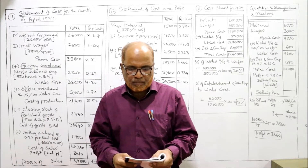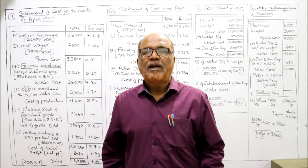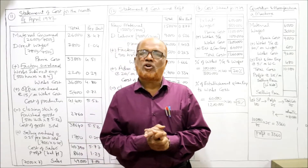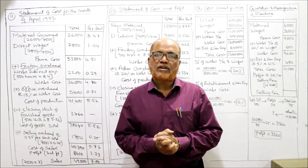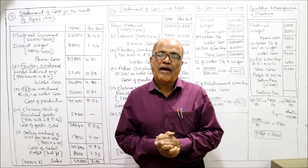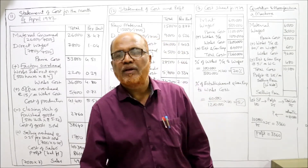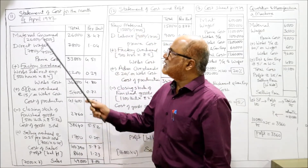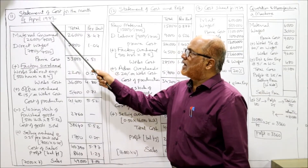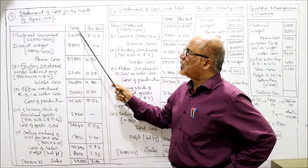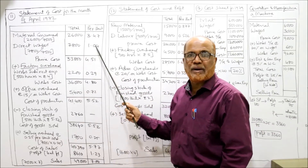The problem asks us to compile a cost sheet showing cost per unit and profit for the month. So we prepare a statement of cost and profit for the month of April 1972, with a total column and a per unit column, since it specifically asks us to calculate per unit figures.